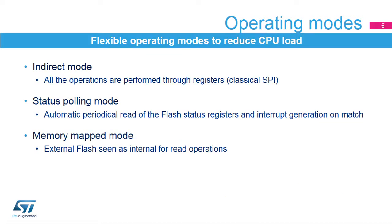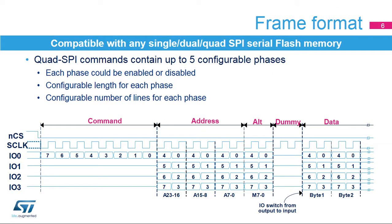The Quad SPI Memory Interface operates in three different modes. In direct mode, it behaves as a classical SPI interface and all operations are performed through registers. In status polling mode, the flash status registers are read periodically with interrupt generation. And in memory mapped mode, the external memory is seen as an internal memory for read operations.